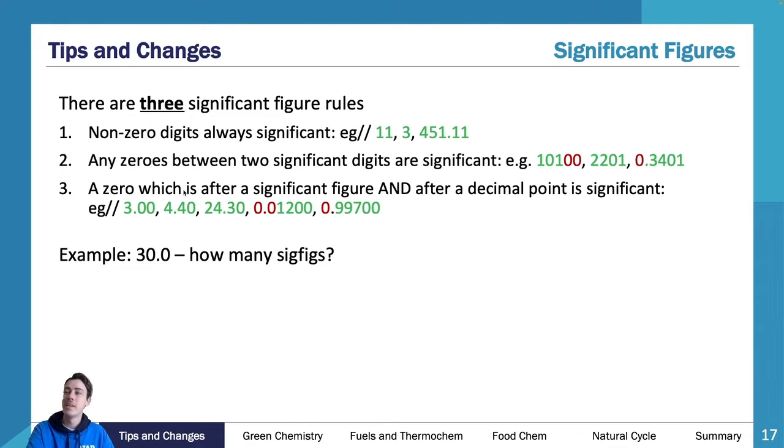Rule 3: A zero which is after a significant figure AND after a decimal point is significant. So this first one, I could just write as 3, but because I wrote it as 3.00, that means I have three significant figures.